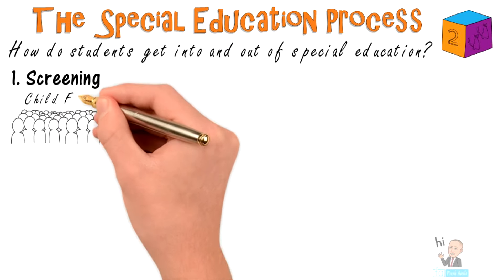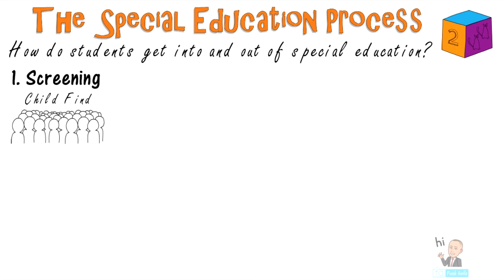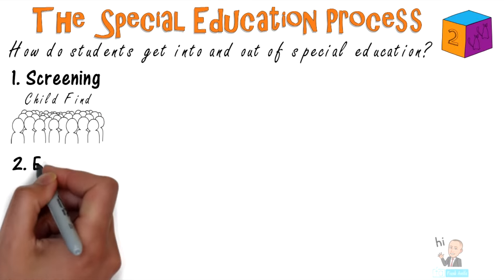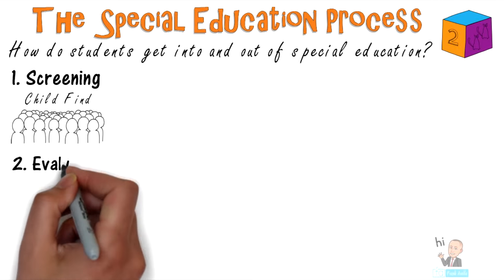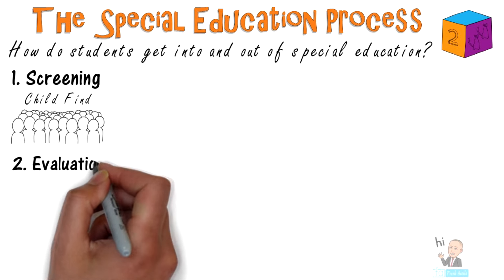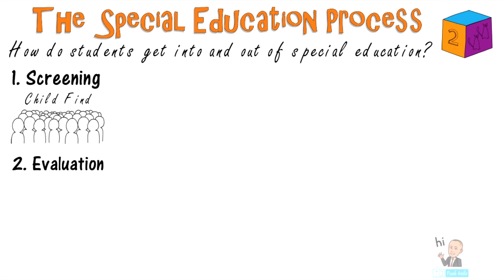States have mandated schools to do a 'child find' procedure. The next step is the evaluation. Here the student is assessed in a wide variety of areas related to the suspected disability. These results are used at the eligibility meeting.